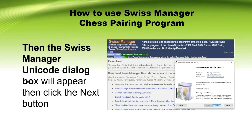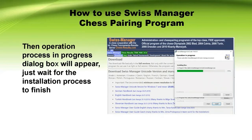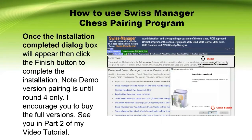Then the Swiss Manager Unicode dialog box will appear. Click the Next button. The Installation Options dialog box will appear. The default destination folder is in Drive C or the Documents folder. Then click Install. The Operation Process in Progress dialog box will appear — just wait for the installation process to finish.